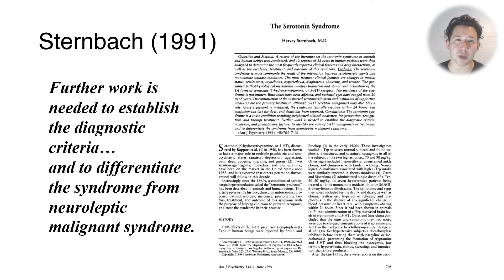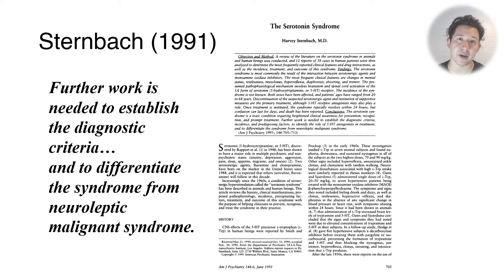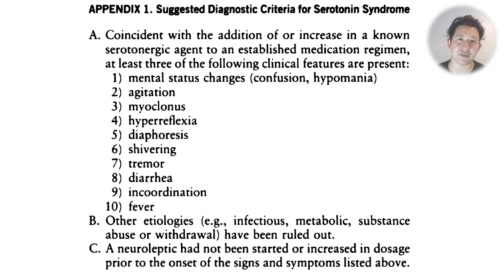Sternbach in 1991 was the guy who became famous by proposing a set of criteria to diagnose serotonin syndrome, and he did this by looking at what features serotonin toxicity commonly presented with. He came up with a set of diagnostic criteria where basically if you take a list of 10 symptoms and had any three of them, then you could be diagnosed with serotonin syndrome.